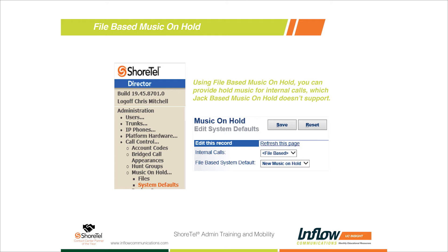Below that you have your File-Based System Defaults. This tells the system what to do with music on hold if no other setting is specified. In the file-based system default dropdown, you can select from the available files — for example, you'll see 'ShoreTel' and 'New Music on Hold' as options. You can also select jack-based as your default, so if you want to stick with jack-based music on hold, just leave it set to jack-based and don't select one of the new files.